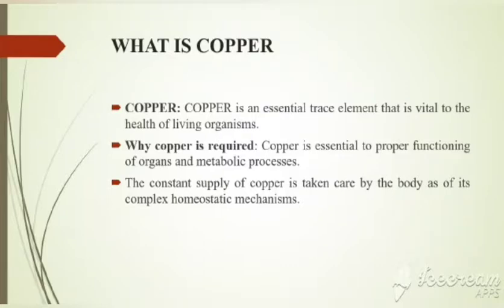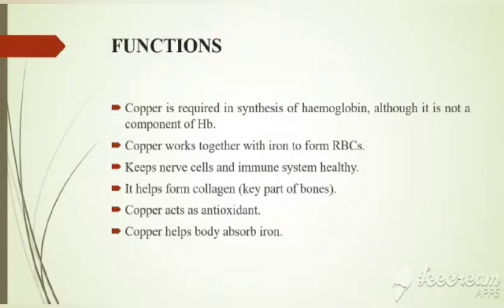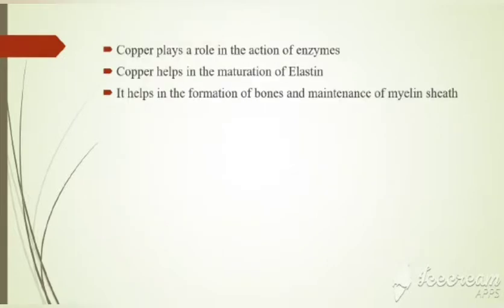The functions of copper: it is required in the synthesis of hemoglobin, although it is not a component of hemoglobin itself. Copper works with iron to form red blood cells. Copper is also used for immune system health and helps form collagen. It acts as an antioxidant that helps reduce the aging of the body. Copper also helps the body absorb iron, plays a role in enzyme action, helps in the maturation of elastin, helps in the formation of bones, and maintains myelin sheaths.